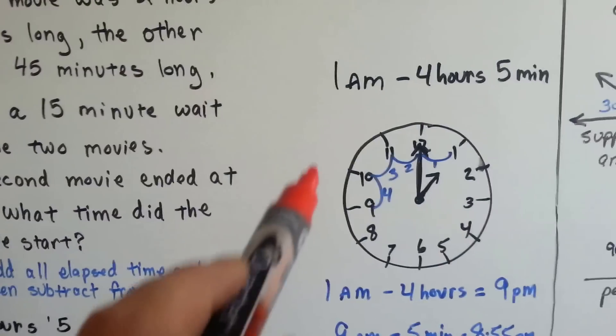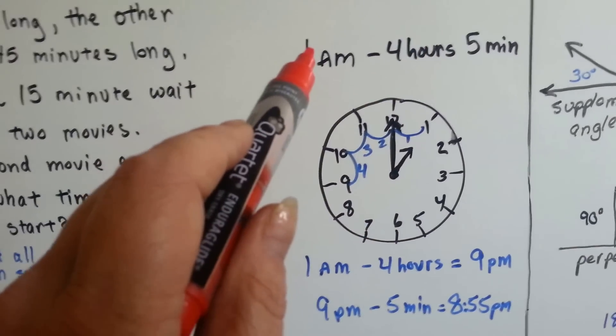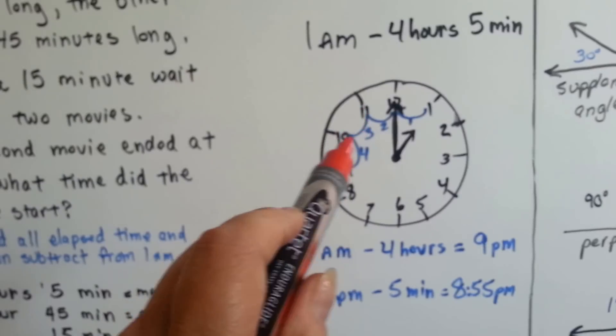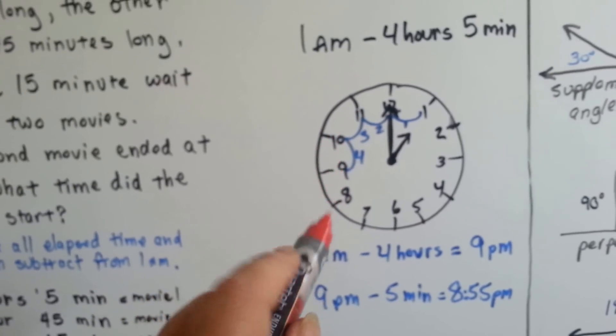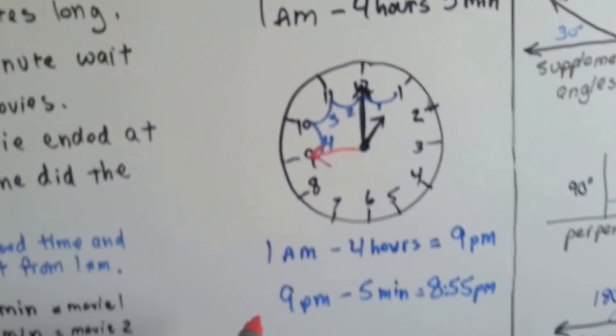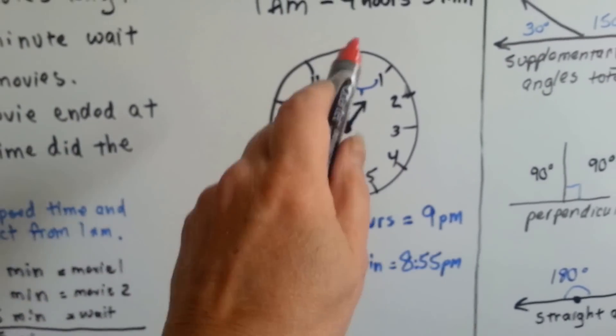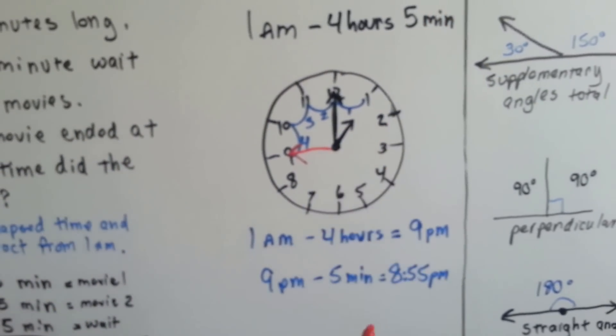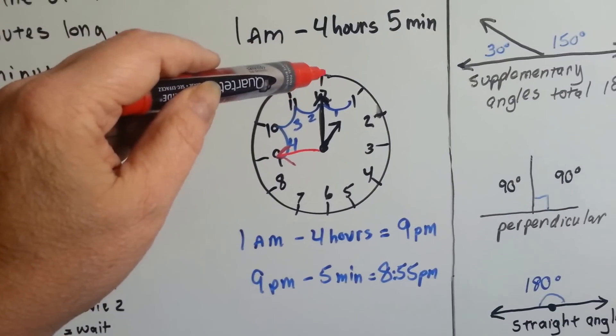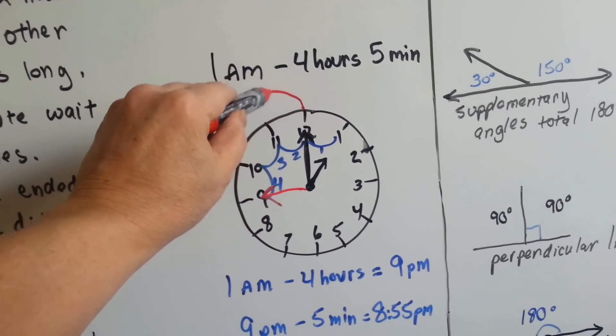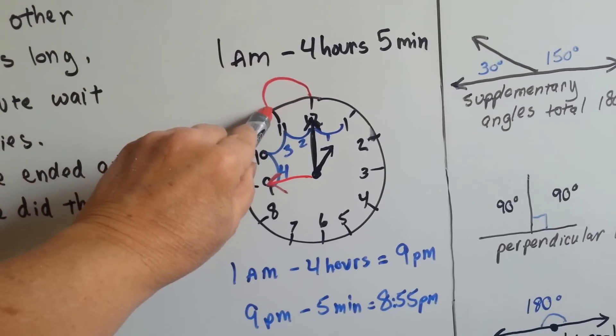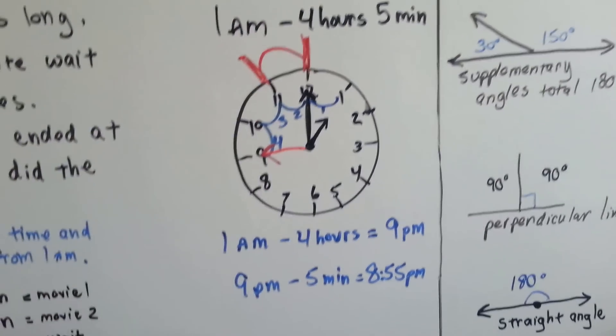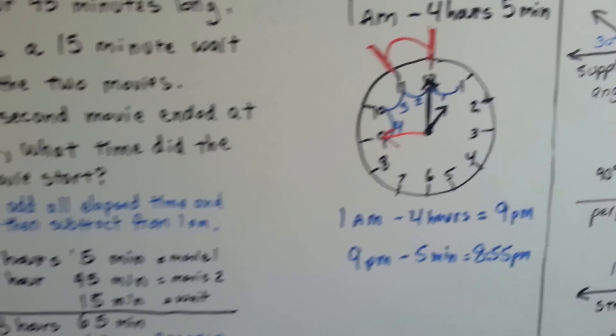So now all we need to do is take away four hours and five minutes from 1 a.m. Well, we set our clock at 1 a.m. and we count back four hours: one, two, three, four. So now the hour hand is pointing to the nine. Okay, we're at 9 p.m. because it was 1 a.m. straight up on the 12 when it ended. But we still need to take away five minutes from 9 p.m. And we know going back from right at the 12 o'clock to the 11 is five minutes, and that that's 60 minutes. So that's going to put us at 55, 8:55 p.m.